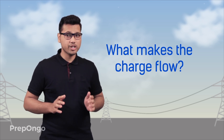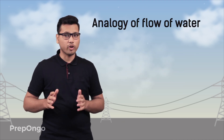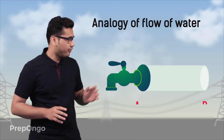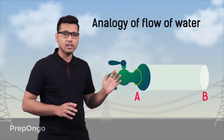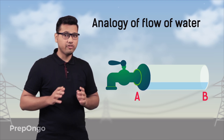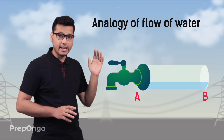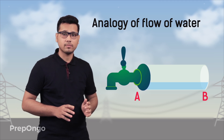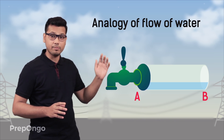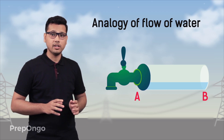To understand this question, let us first understand a basic analogy of flow of water, or the water current. Let us take a horizontal tube and fill it with water. Now if no external force is there and end B is closed, will the water at end A flow when I open the tap? No, obviously no. Because if we look at the water level at point A and point B, there is no water level difference, so water will not flow.